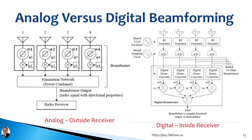Doing it analog versus digital — analog beamforming takes place outside the receiver, where you have components to adjust the phase and amplitude of the signal from each antenna, combine them, and feed that into your receiver. With the modern digital beamforming technique, you take data from different antennas, put them into different channels of the receiver, and use electronics or mathematics to manipulate phase and amplitude before summing together. Modern diversity reception uses a shared local oscillator and sampling clock across multiple channels, converts data down to baseband, and then does the math to create improvements.